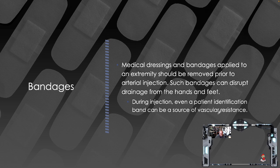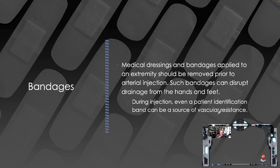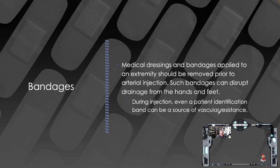Medical dressings and bandages applied to an extremity should be removed prior to arterial injection — these are extravascular resistances that can disrupt drainage from hands, feet, or any other area. Even a patient identification band can be a source of vascular resistance. As a general statement, we do not remove identification from a body; however, if it is so tight that it is cutting into the skin or restricting circulation, you are under a professional obligation to remove it, affix new identification, and attach the old identification to your paperwork per workplace protocols.